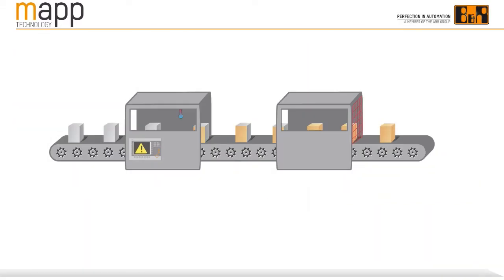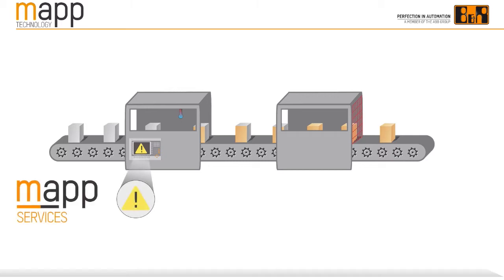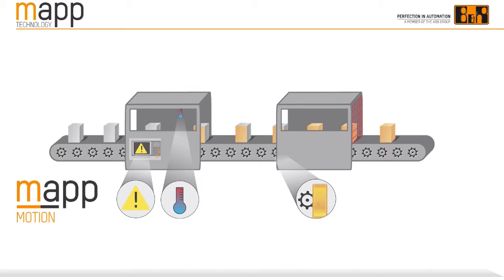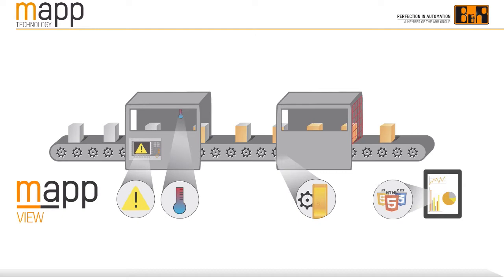MAP technology is organized into the areas of control technology, motion control, machine infrastructure, HMI, and safety technology. MAP services can be used to configure the entire infrastructure of a machine. MAP control lets you implement closed-loop control processes. MAP motion can be used to operate drives and perform axis movements. MAP view makes it easy to implement powerful HMI applications based on open web standards. A machine's safety functions are implemented using MAP safety.